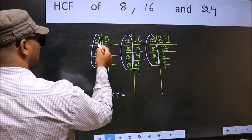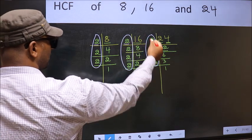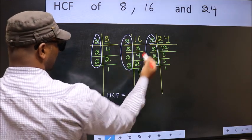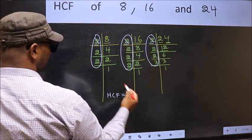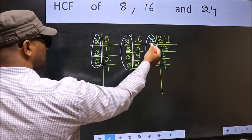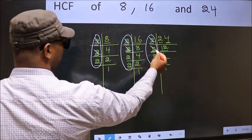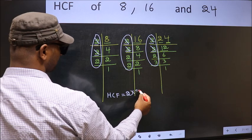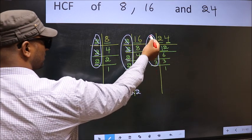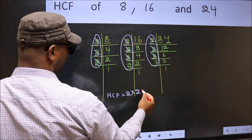Starting with the number 2. Do we have 2 here? Yes. So go to the next place. Do we have 2 here? Yes. So cut 2 and write here. Next number 2. Do we have 2 here? Yes. So cut 2 and write here. Next number 2. Do we have 2 here? Yes. So cut 2 and write here.